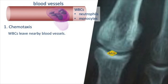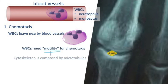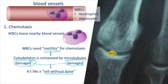For example, white blood cells need motility for chemotaxis. The cell skeleton is composed of microtubules, so if it is damaged, the cell is like a body without bones — it cannot move, meaning it cannot perform chemotaxis.